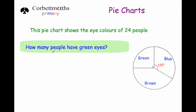The next question says how many people have green eyes? As you can see it's a quarter. So if we do 24 divided by 4 we'll see how many people have green eyes. 24 divided by 4 is 6. So 6 people have green eyes.